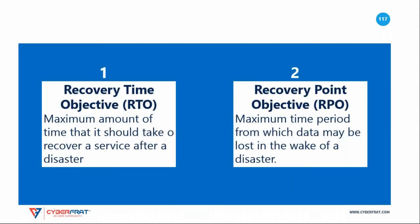There are two key metrics used to help an organization plan its disaster recovery effort. The Recovery Time Objective, or RTO, is the targeted amount of time it will take to restore a service to operation following a disruption. The Recovery Point Objective, or RPO, is the maximum time period from which data may be lost as the result of a disaster. Together, the RTO and RPO provide valuable information to disaster recovery planners.